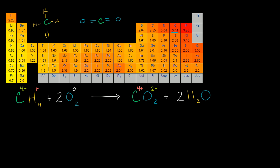And then finally you have water, which we've seen multiple times already. Oxygen in each of its — what in reality are covalent bonds with the hydrogens — in our hypothetical ionic bond world, oxygen is a good bit more electronegative. So we assume it's going to take the electrons from the hydrogens. Each of the hydrogens loses an electron, giving it an oxidation number of positive one. And the oxygen has gained two electrons, so that gives it an oxidation number of negative two.